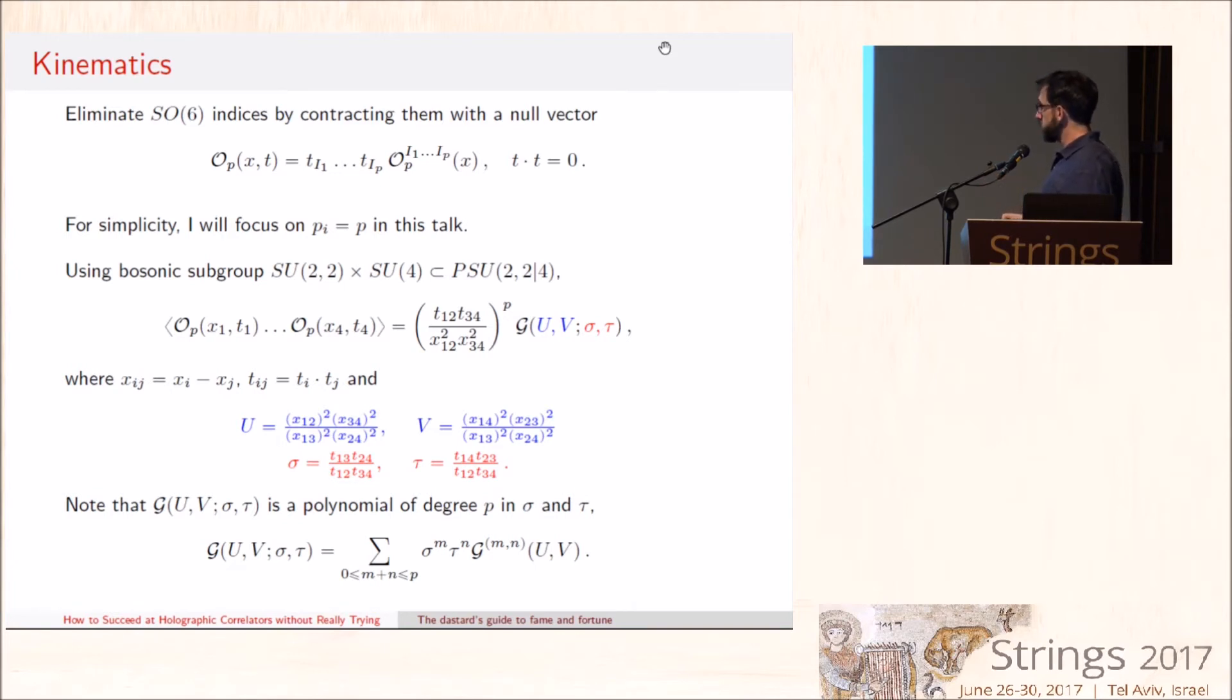In complete analogy, one also defines some cross ratios, σ and τ, for the R-symmetry part. So this makes the symmetry between S5 and AdS5 somewhat more transparent. But of course, it should be kept in mind that the R-symmetry part encodes transformation properties that are the finite dimension representation of SU(4). So really, this is just a polynomial in σ and τ. This is just a convenient way to organize a finite set of functions of the cross ratio. The non-trivial dependencies in the cross ratios and this G_{MN} just encode group theoretic factors.